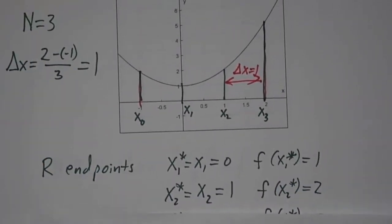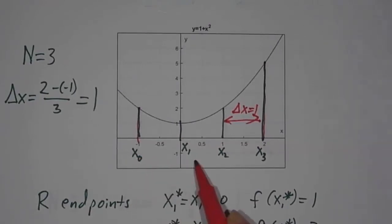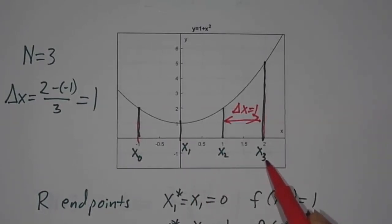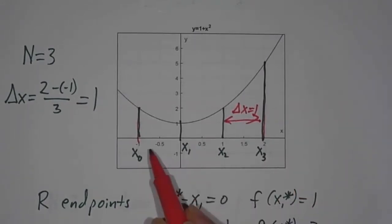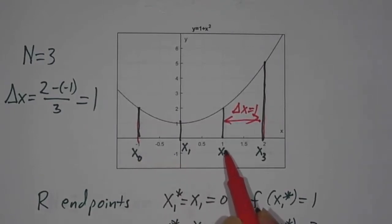In all cases, we call the starting point x0, then delta x to the right is x1, delta x to the right of that is x2, delta x to the right of that is x3, and x3 is our ending point. We have three intervals: from x0 to x1, from x1 to x2, and from x2 to x3.